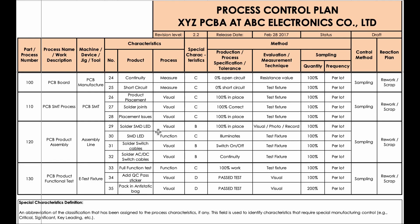This is an example of a process control plan on a PCBA process. We're looking at the assembly of components on the assembly line after the SMT process. Everything is bundled here — all the stations on the assembly line — and there are four control points documented.